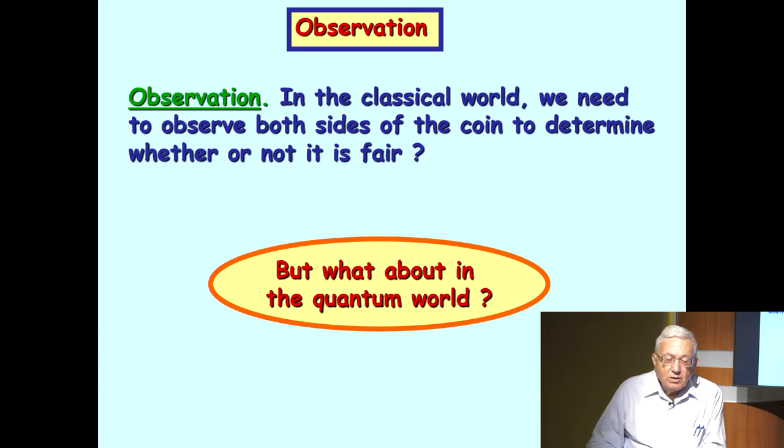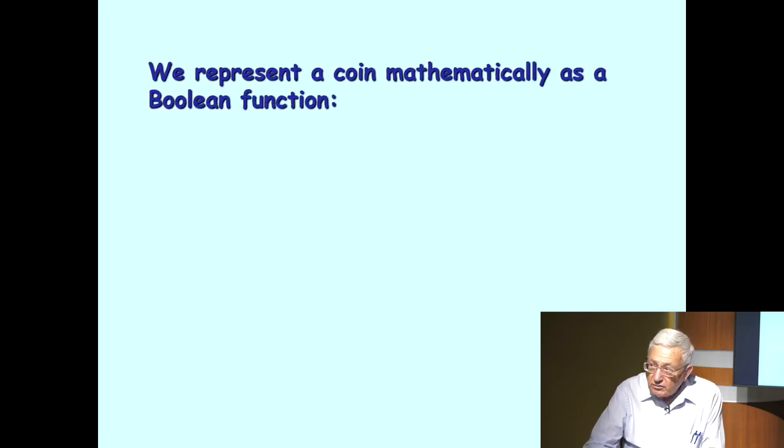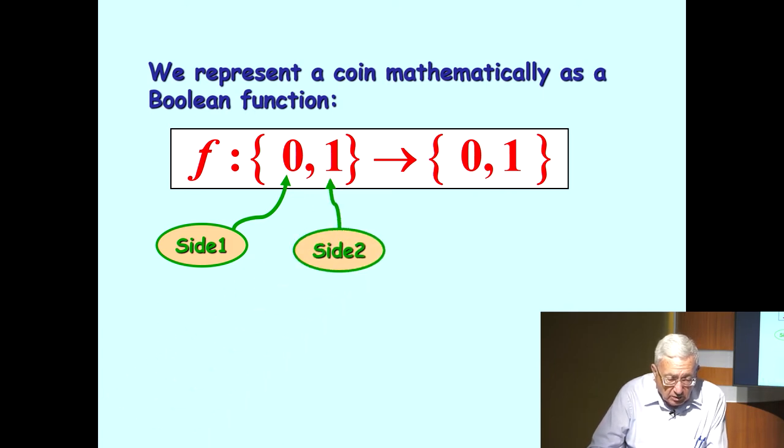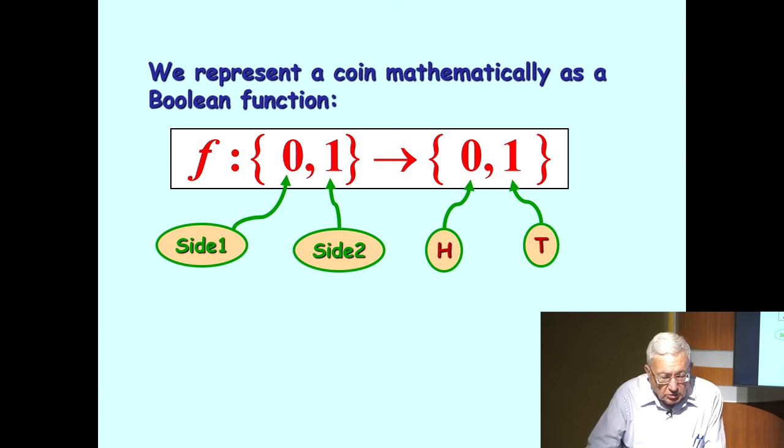What we need to do to understand this algorithm and define it is to represent a coin mathematically as a Boolean function. In computer science, we encounter Boolean functions all the time. So we can think of a coin as simply a map from zero one to zero one. And of course, side one of the coin is denoted by zero, and side two is denoted by one. And heads is what's on side one and tails is what is on side two. So a coin is modeled mathematically as a Boolean function.